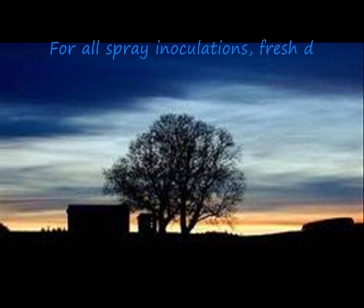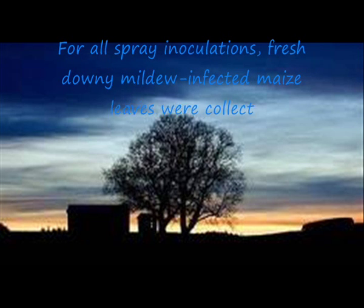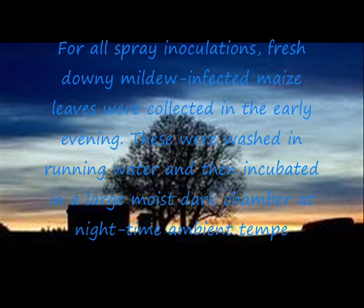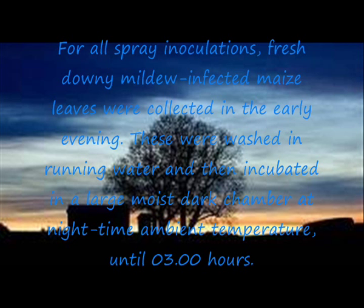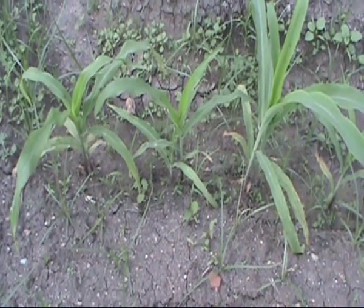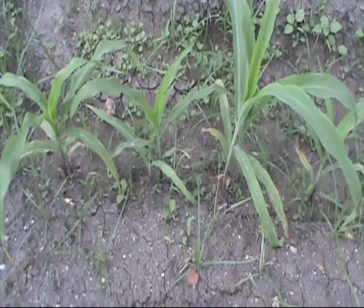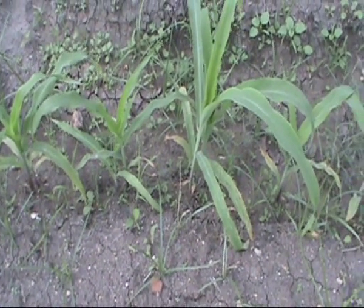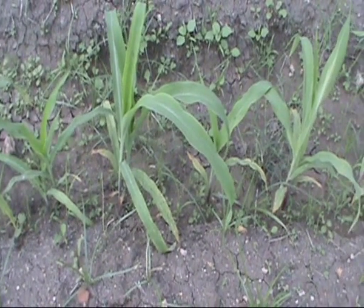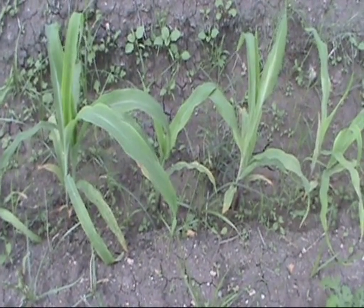For all spray inoculations, fresh downy mildew-infected maize leaves were collected in the early evening. These were washed in running water and then incubated in a large moist dark chamber at night ambient temperature. Test entries are planted after ensuring 100% disease establishment in spreader rows, thus exposing test entries to infection by both oospores from soil and conidia from spreader rows.